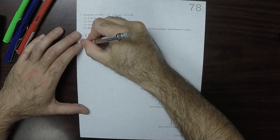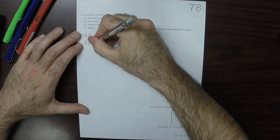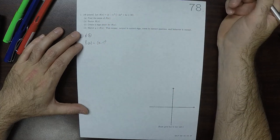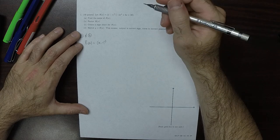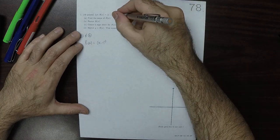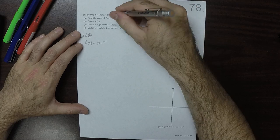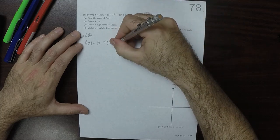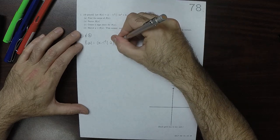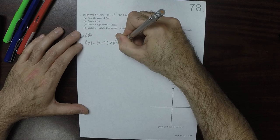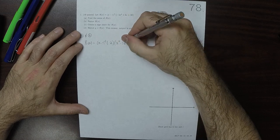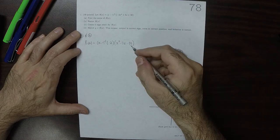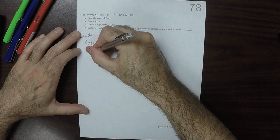So r of x is x minus 1 cubed. And then we can factor out a negative 2 out of that quadratic. So negative 2. And then factoring that out, we get x squared minus 3x minus 10. And then does that one factor easily? Yes, it does.